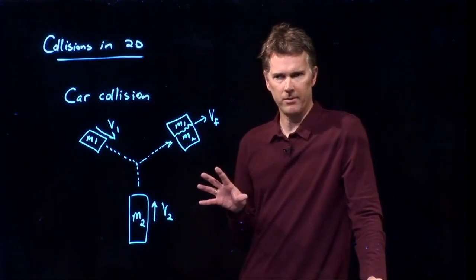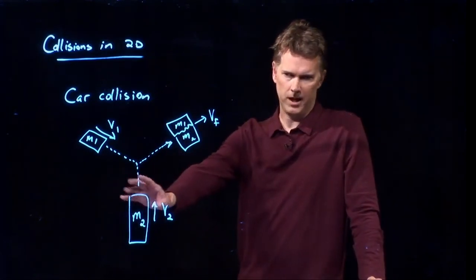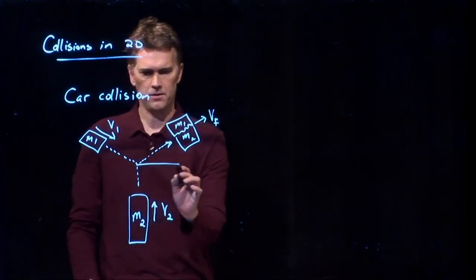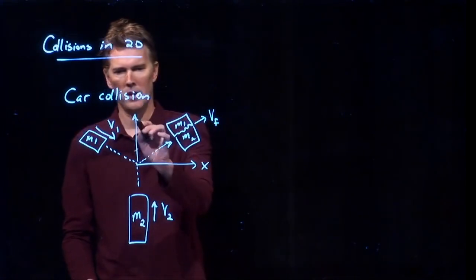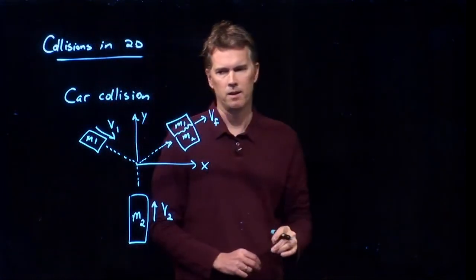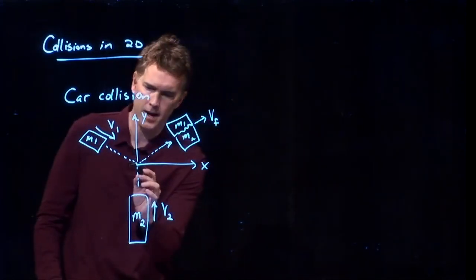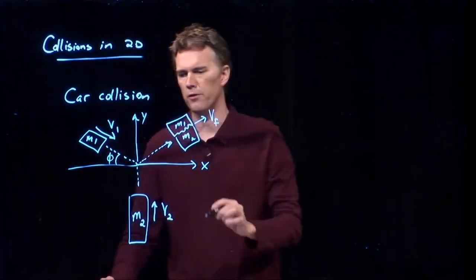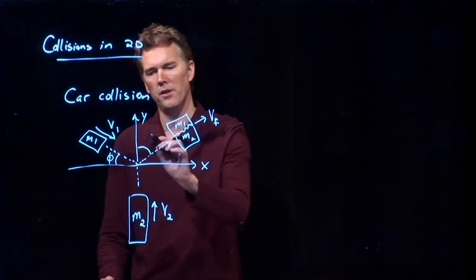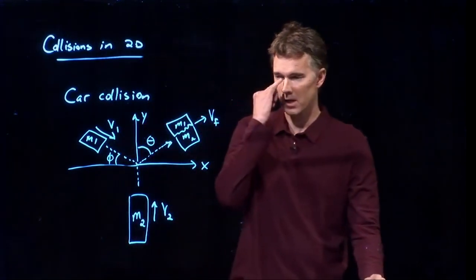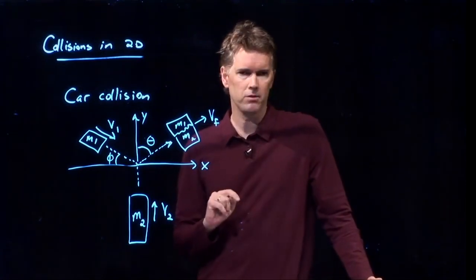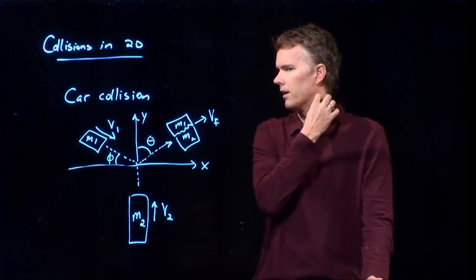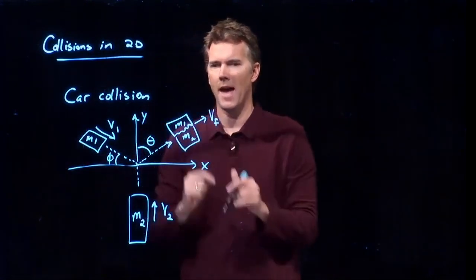So this is what it looks like in general. And whenever you draw something in general like this, you should always identify a coordinate system. So it makes sense to use this as our x and use this as our y. And if that's the case, then we need to identify some angles. Let's call this angle phi. And just for kicks, let's call this angle theta. Usually we write theta relative to the x-axis. But just as an example, let's use that as our theta. So this is the before picture. This is the after picture.